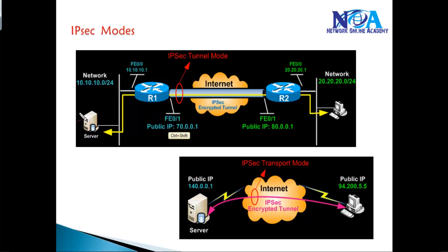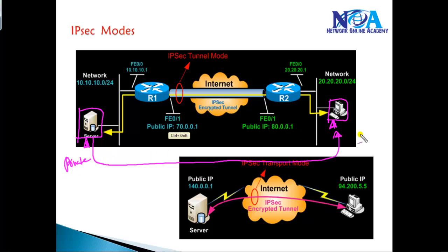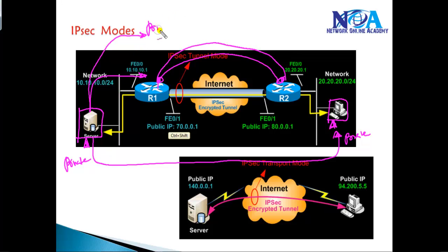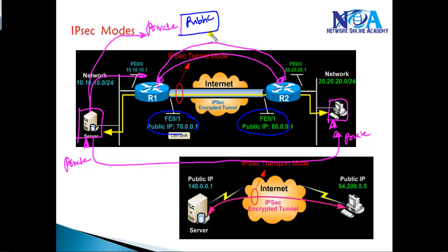The major difference between tunnel mode and transport mode — let's take an example. You have a server and a user trying to connect, and you want to provide connectivity between these two endpoints over private networks. Your information comes to the router and we build a virtual point-to-point tunnel from Router 1 to Router 2. Your packet comes with a private IP address, and in tunnel mode it adds extra header information — a tunnel source IP and a tunnel destination IP, which are public IP addresses.